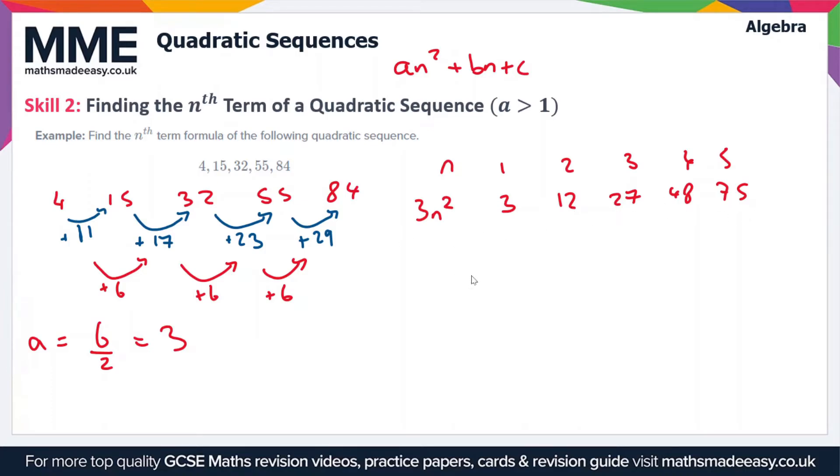Next, what we need to do is write the sequence un. So this is our original sequence, and this was equal to 4, 15, 32, 55, and 84. And the last line in the table is un minus 3 n squared. So this is more or less the same method as when a is 1, except we have 3 n squared here rather than n squared. So un minus 3 n squared is going to be the third line of the table minus the second line.